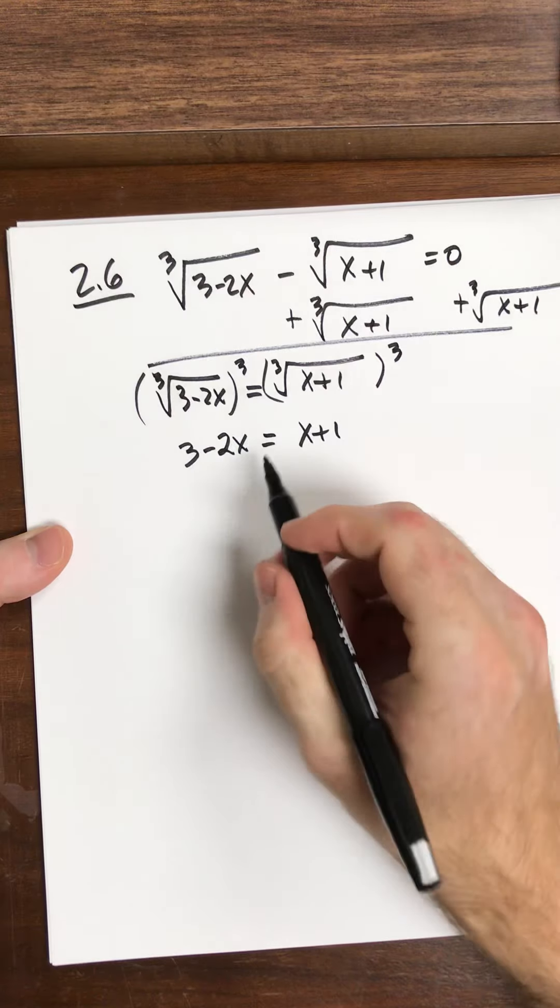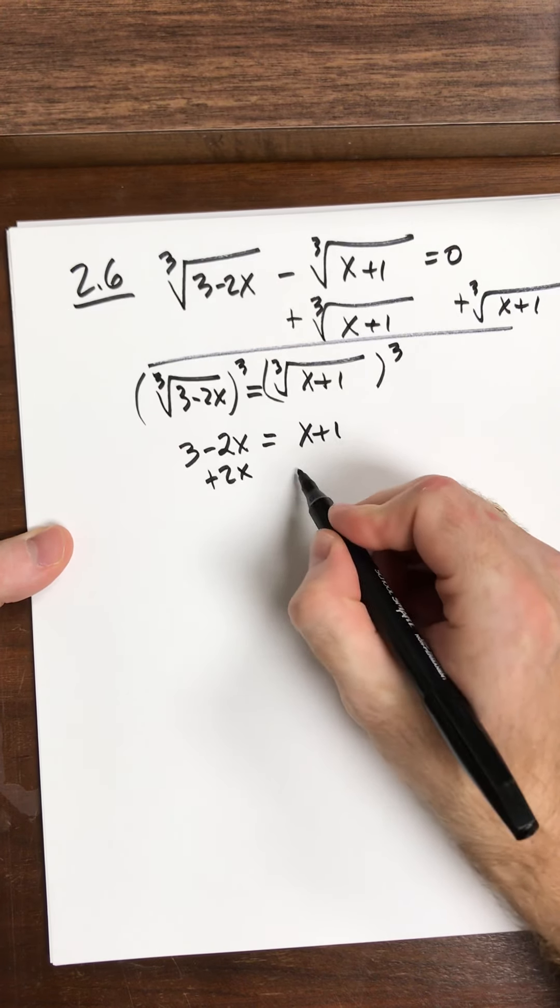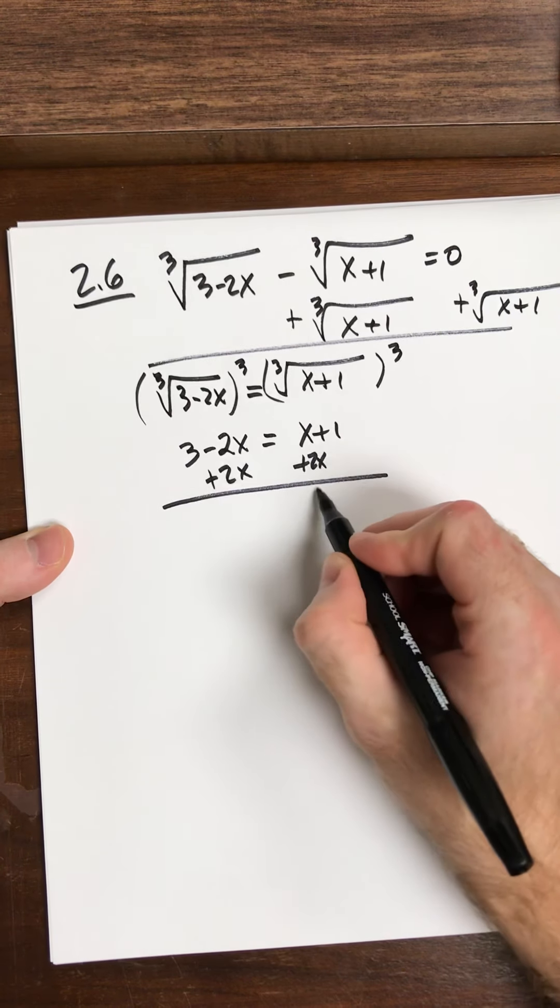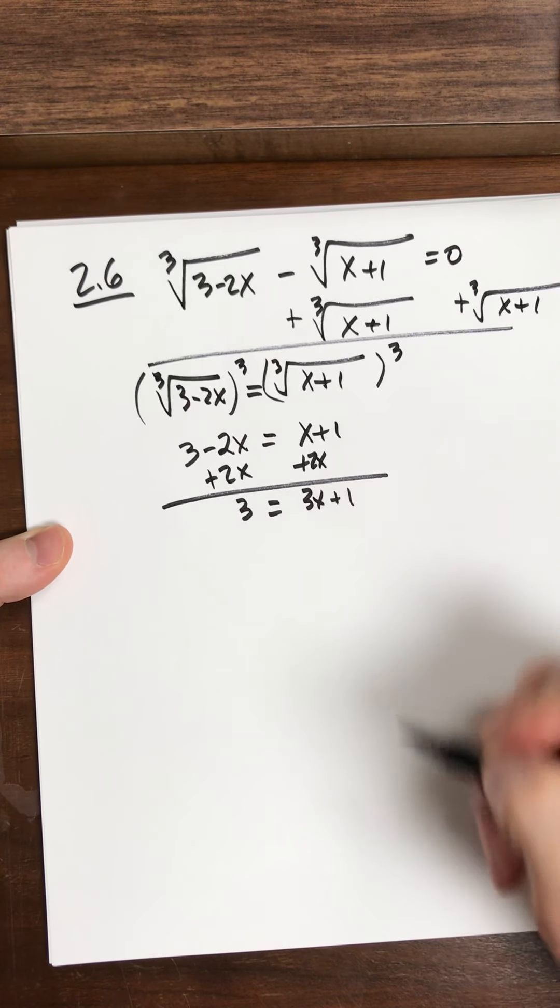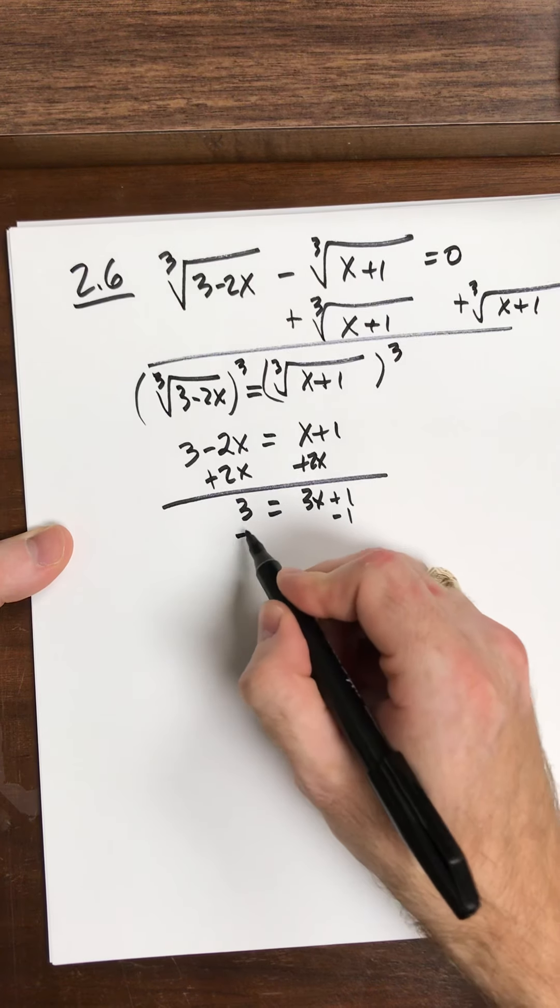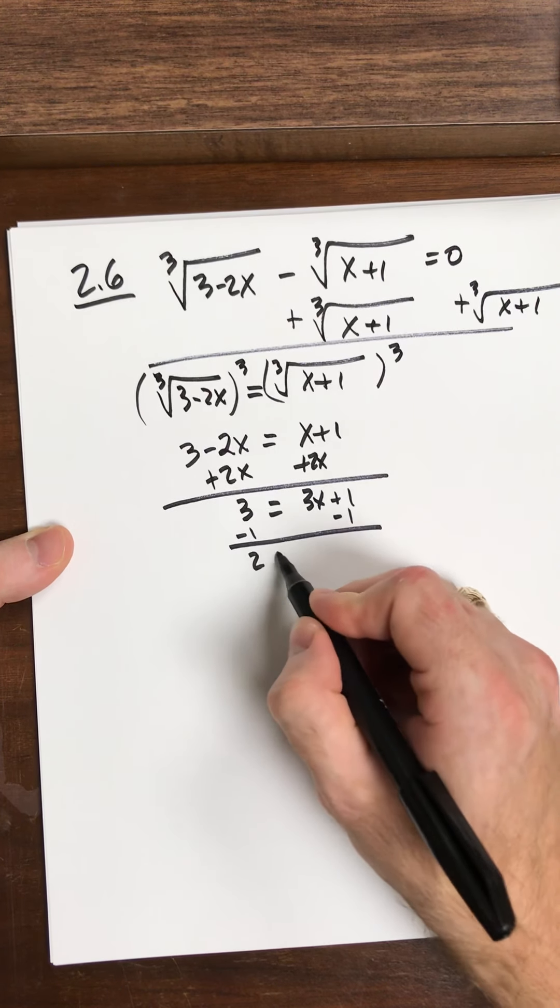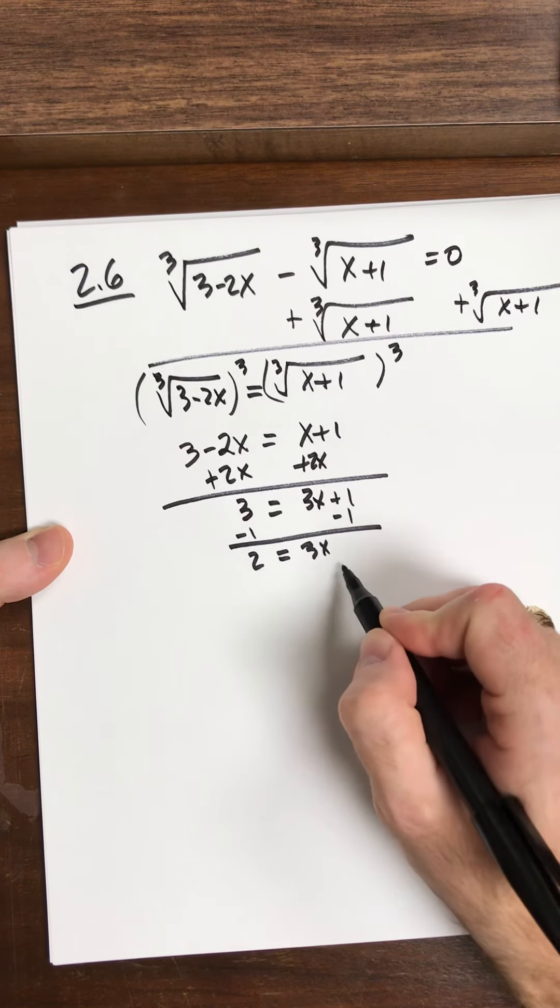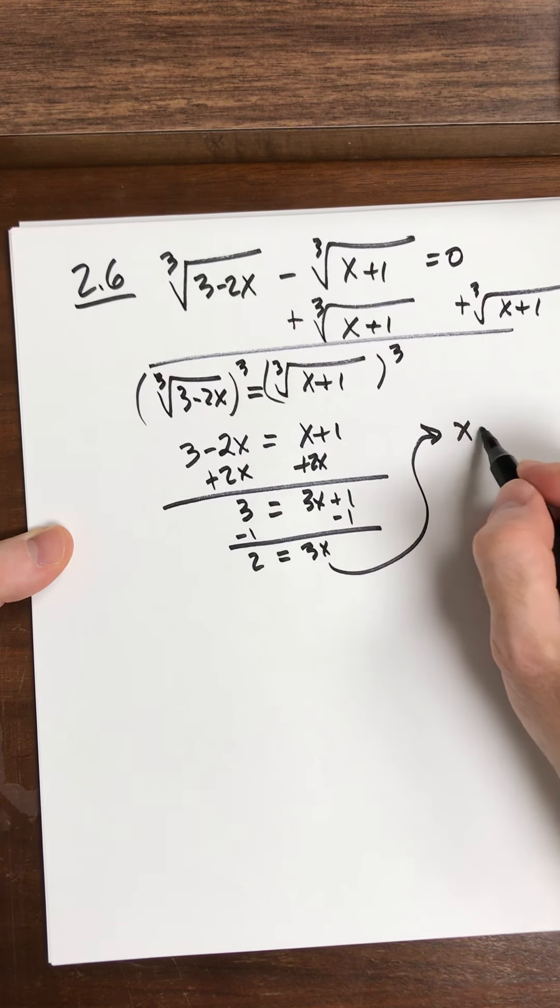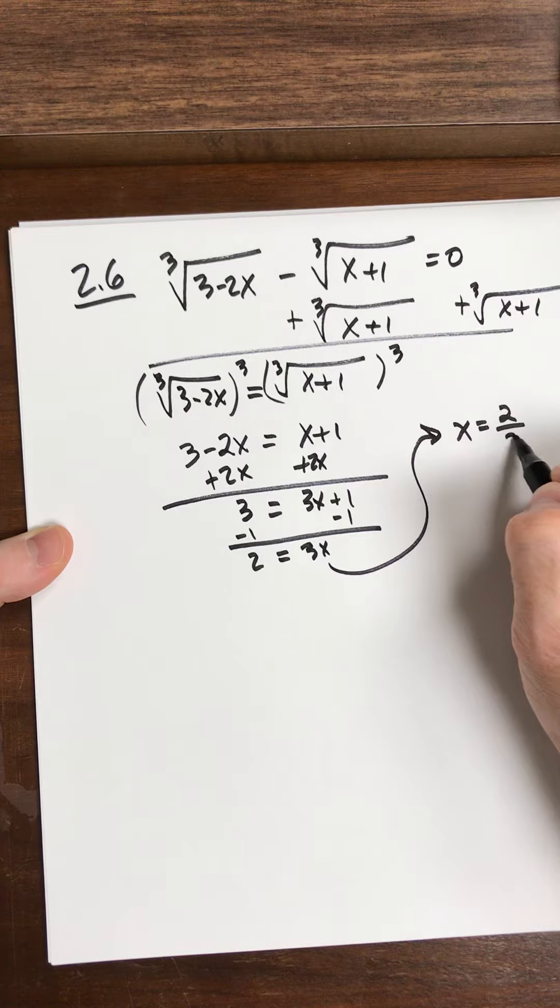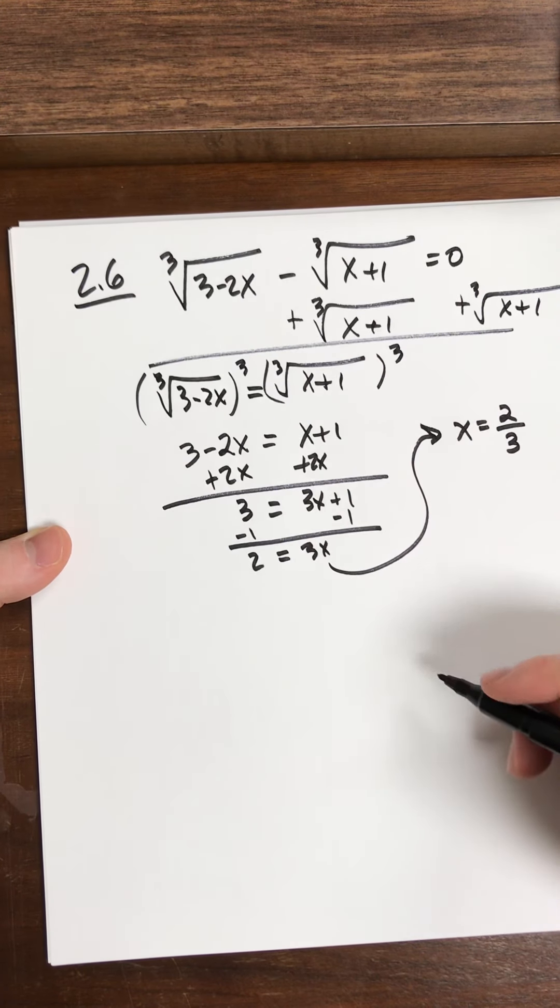Now it's business as usual. Get your x's on one side. So this is 3x plus 1 equal to just 3 minus 1, and so that's 2 equals 3x. So that means that x, divided by 3 on both sides, we get 2 thirds, but now I need to check it.